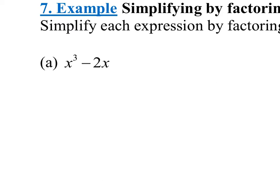The first one is x cubed minus 2x. All you're looking for with factoring here is whether they have anything in common. Both of these have an x in common, so I'm able to pull an x out. I think about what is x cubed divided by x — there would be an x squared left over. And what is negative 2x divided by x — there's a minus 2 left over.